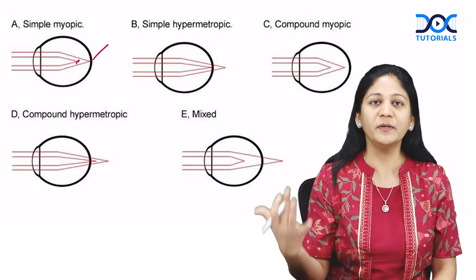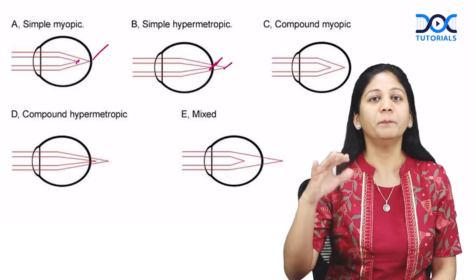Simple hypermetropic is the opposite - one at the retina, another beyond the retina.